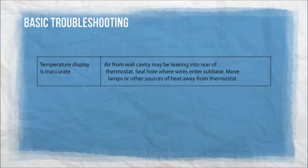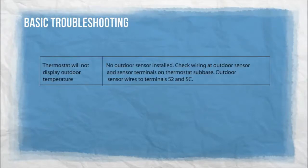Temperature display is inaccurate. Air from the wall cavity may be leaking into the rear of the thermostat — seal the hole where the wires enter the sub base. Move lamps or other sources of heat away from the thermostat. Thermostat will not display outdoor temperature: no outdoor temperature sensor installed. Check wiring at the outdoor sensor and sensor terminals on the thermostat sub base. Outdoor sensor wires to terminals S2 and SC.